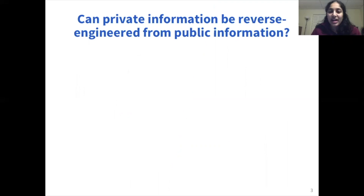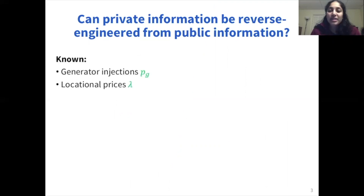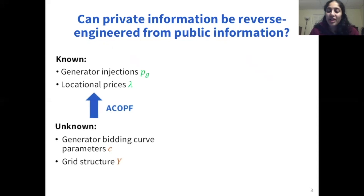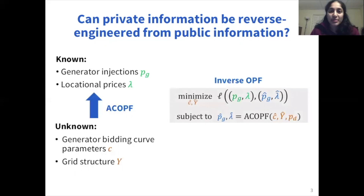We consider the following setting. Imagine we have historical data on hourly power generation from grid generators as well as locational power prices. These quantities are the output of power system algorithms such as AC optimal power flow, or ACOPF, that are used to schedule power generation on the grid. However, the inputs to ACOPF — things like power costs and grid structure — are quantities that are kept private for reasons like market protection and grid security. So the question we ask is: can ACOPF be reverse engineered to some extent? As we represent in this optimization problem, can we guess the values of the private inputs to ACOPF that produce the public outputs we can observe on the grid?